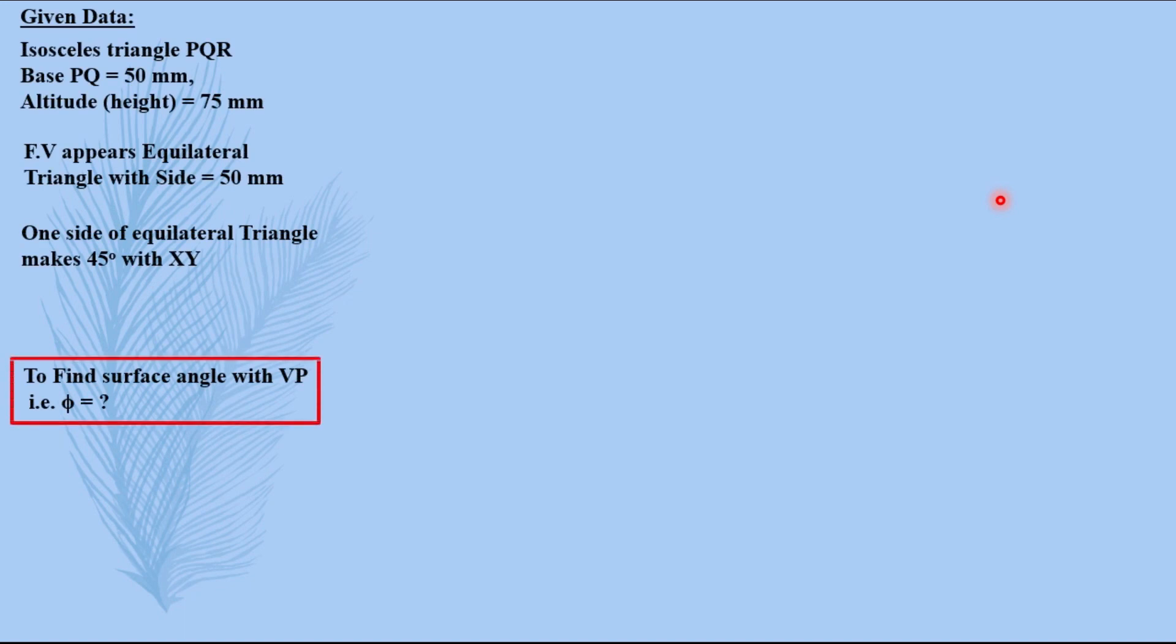Now let us analyze the given data first. To find surface angle with VP phi means as the surface angle is with VP, true shape will be visible in front view. This is the first thing you have to identify.